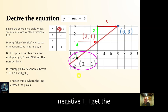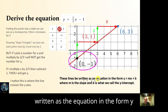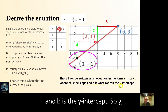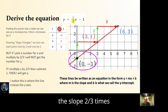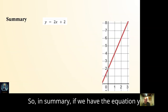These lines can be written in the form y equals mx plus b, where m is the slope and b is the y-intercept. So y equals the slope two thirds times x, minus one.